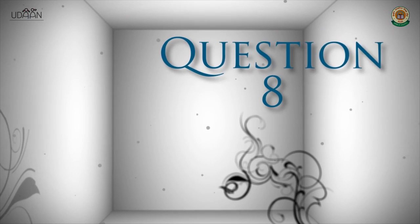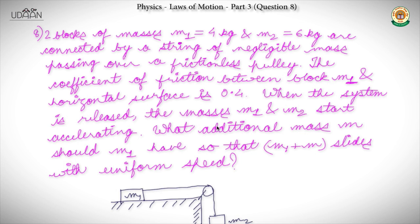Now question 8: two blocks of mass 4 kg and 6 kg are connected by a string of negligible mass passing over a frictionless pulley. The coefficient of friction between block M1 and the horizontal surface is 0.4. When the system is released, masses M1 and M2 start accelerating. We need to find what additional mass m should be added to M1 so that the new mass (M1 + m) slides with uniform speed.